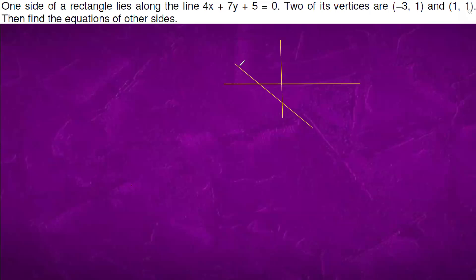We are told that there is a point. We can see that this line is not perpendicular, hence there will be something perpendicular coming out this way.